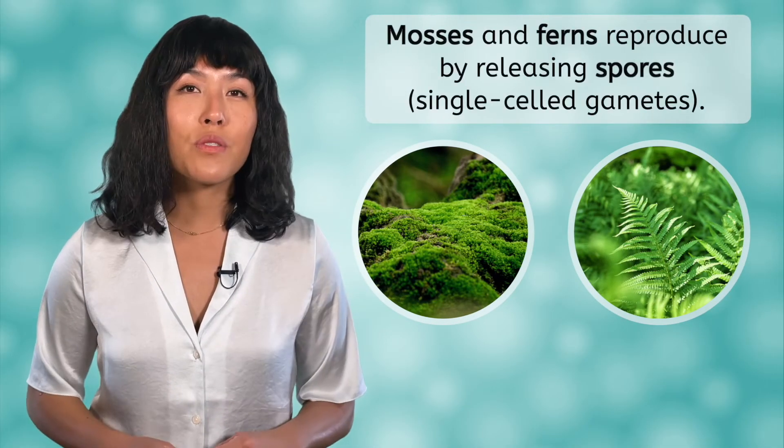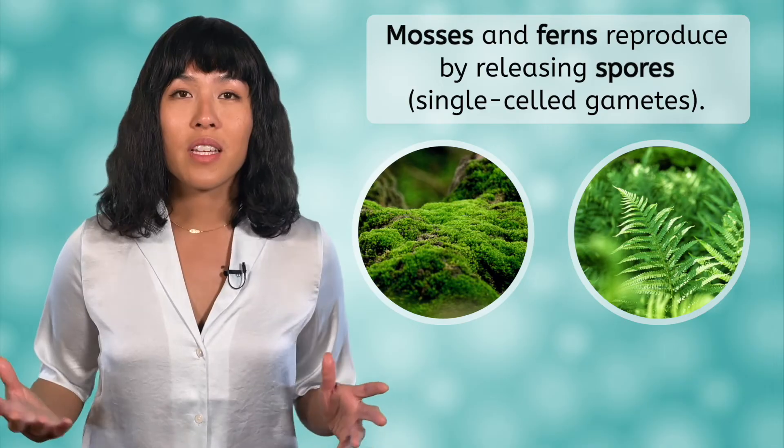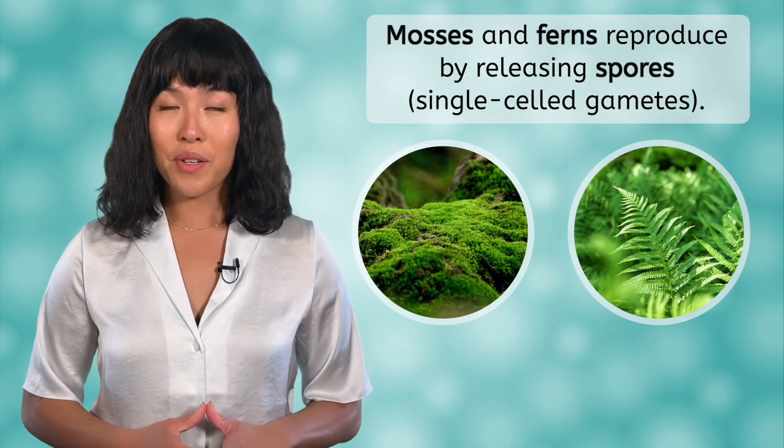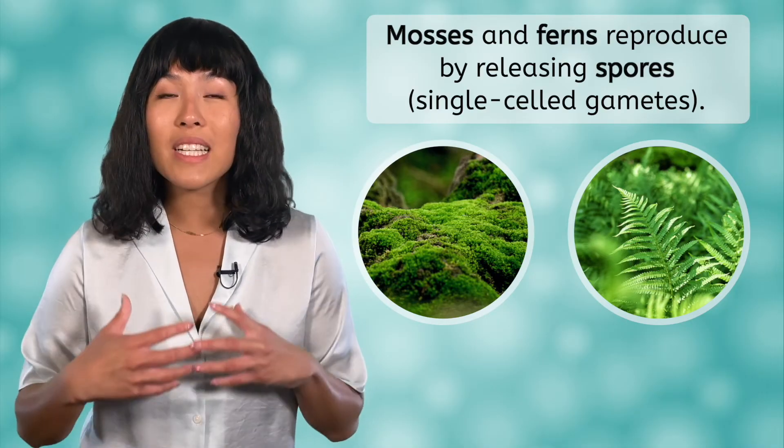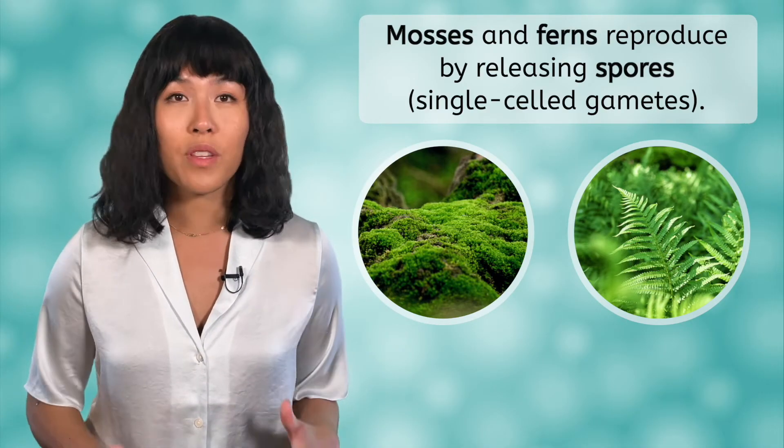Seedless plants, such as mosses and ferns, reproduce by releasing spores, similar to the way that fungi reproduce. The gamete cells from the adult plant are released directly into the air or water with no protection.